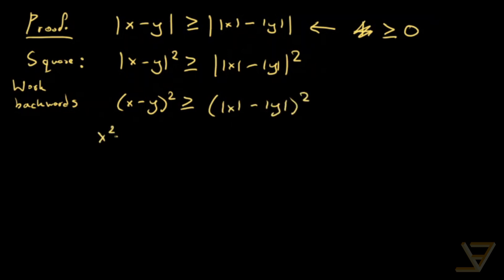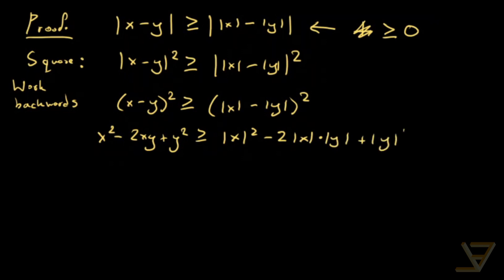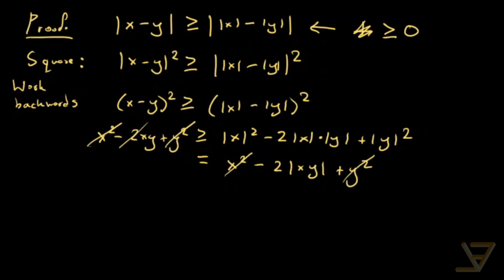So we get x minus y squared greater than or equal to the absolute value of x minus the absolute value of y, all squared. Expanding: x squared minus 2xy plus y squared is greater than or equal to the absolute value of x squared minus 2 times the absolute value of x times the absolute value of y, plus the absolute value of y squared. We can again drop the absolute values on the squared terms, and after cancellation we're left with the absolute value of xy is greater than or equal to xy.